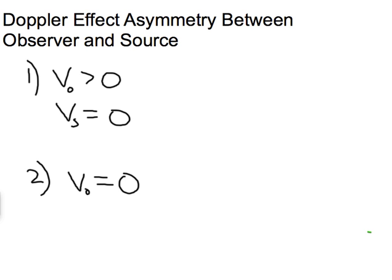Situation number one will have the observer moving and the source stationary. In situation number two, the observer is stationary and the source of the sound is moving towards the observer. In both cases, the relative speeds are the same, they are moving towards each other, yet you will get different answers.